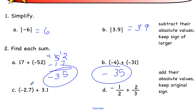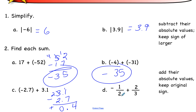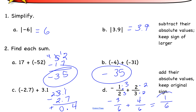Negative 2.7 plus positive 3.1: different signs, put the bigger on top, subtract — borrow to get 11 minus 7 is 4, decimal point, 2 minus 2 is 0 — giving positive 0.4 since 3.1 is bigger. For fractions with different denominators, find a common denominator of 6: negative one-half becomes negative 3 sixths, positive two-thirds becomes 4 sixths. Opposite signs, subtract: 4 minus 3 is 1, and 4 is positive, so the answer is positive 1 sixth.